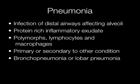Pneumonia is infection of distal airways affecting the alveoli. There is a protein-rich exudate containing polymorphs, lymphocytes and macrophages. Pneumonia may be primary or secondary to another condition, and the two main types are bronchopneumonia and lobar pneumonia.